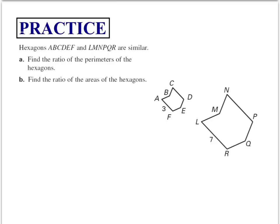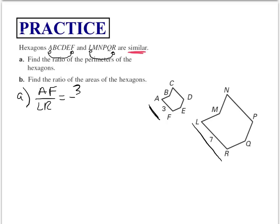Let's look at these two hexagons — hexagon ABCDFL and hexagon LMNPQR. The first crucial piece of information is that these two hexagons are similar. Part A wants us to find the ratio of the perimeters. Side AF corresponds with side LR. The ratio of those two sides is 3 to 7. Since the ratio of the perimeters equals the ratio of corresponding sides, the ratio of the perimeters is 3 over 7.